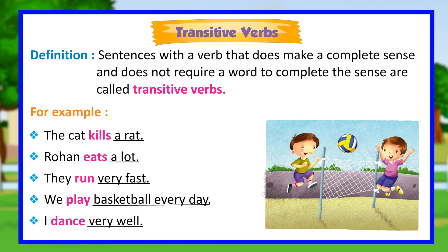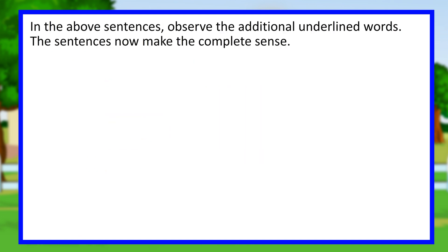Transitive verbs definition: sentences with a verb that does make complete sense and does not require a word to complete the sense are called transitive verbs. For example: 'The cat kills a rat.' 'Rohan eats a lot.' 'They run very fast.' 'We play basketball every day.' 'I dance very well.' In the above sentences, observe the additional underlined words — the sentences now make complete sense.